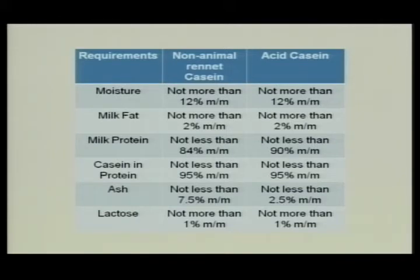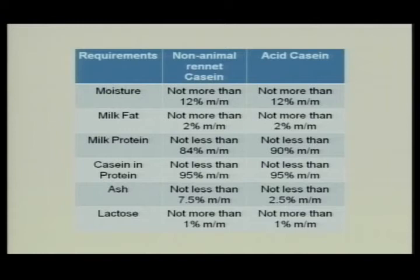There should be practically no lactose in dried casein. Lactose should not be more than 1% in non-animal rennet casein and not more than 1% in acid casein, which is prepared by coagulating skim milk with hydrochloric acid, sulfuric acid, or lactic culture. Non-animal rennet casein uses non-animal or ecological rennet for precipitation of casein from skim milk.